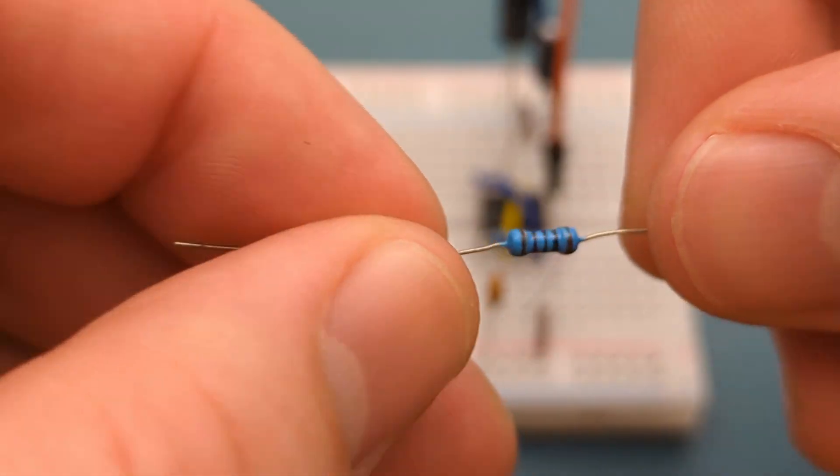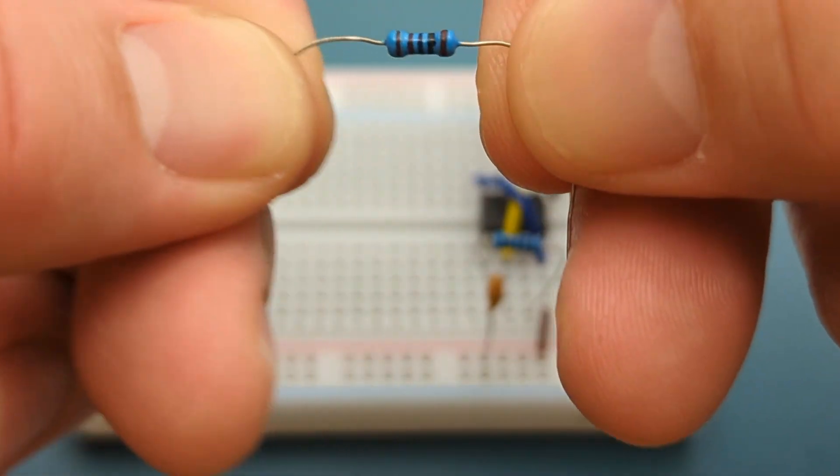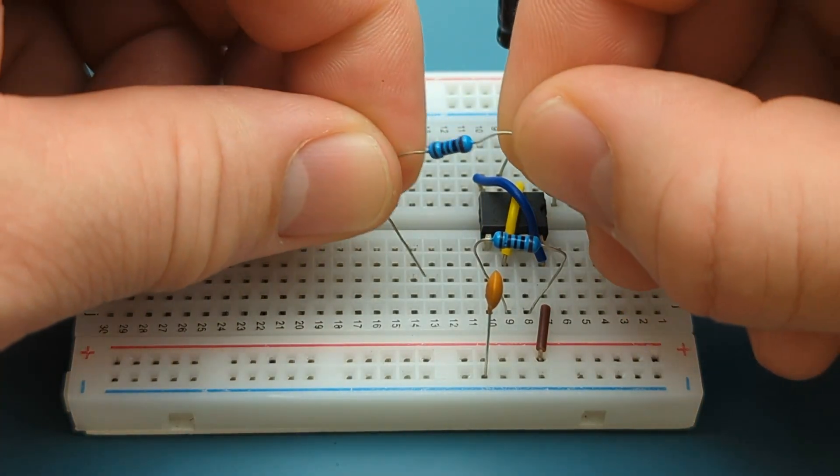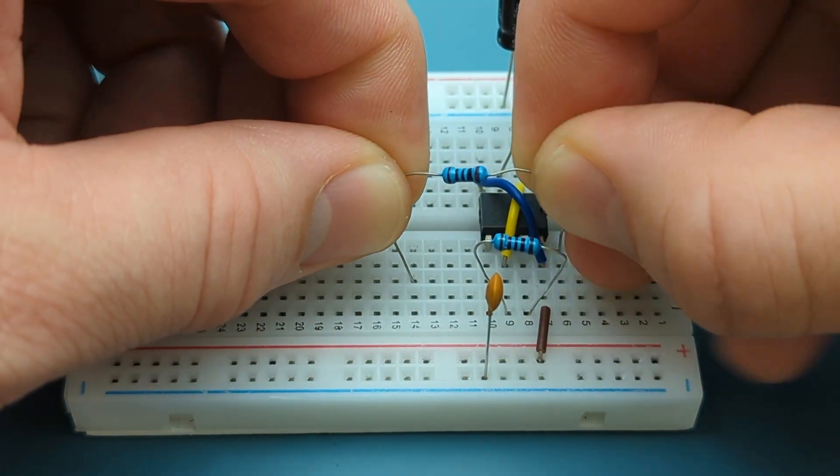Bend the ends of a 1000 ohms resistor. Insert the 1000 ohms resistor into pin 7 or discharge in a few rows below the 555 timer.